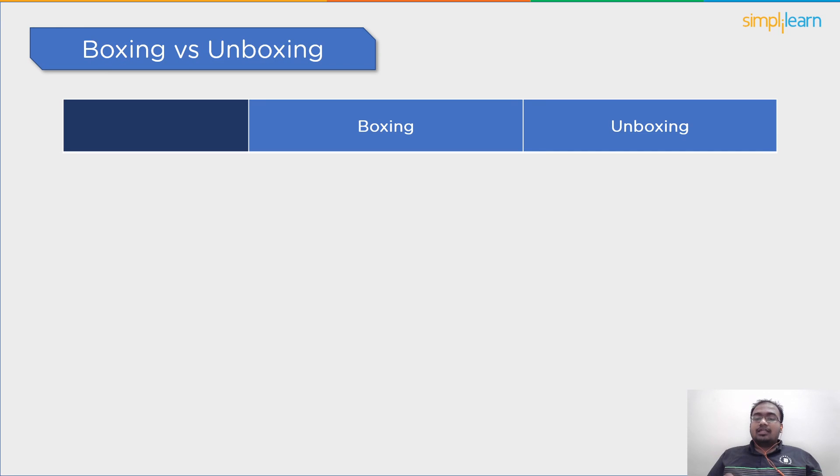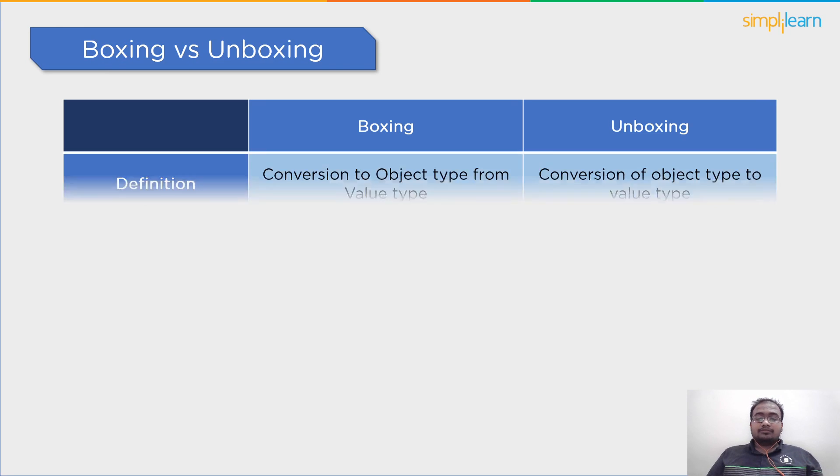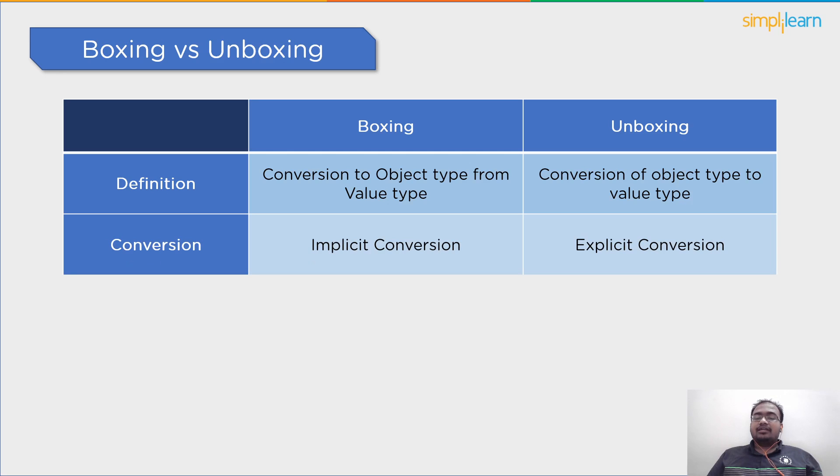First, let's check the base definition. Boxing is basically a conversion of value type to an object type. Then we have conversion type. Boxing is classified as an implicit conversion technique. Whereas unboxing is an explicit conversion factor.